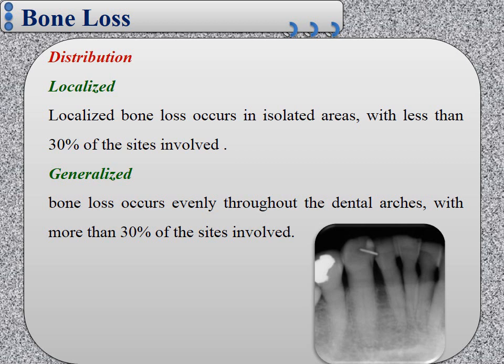According to the distribution, bone loss is classified into localized bone loss, which occurs in an isolated area of the dental arch and less than 30% of the sites will be involved. While generalized bone loss occurs throughout the dental arch and more than 30% of the sites will be involved, as we see in the dental radiograph.